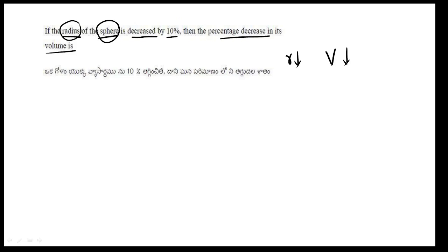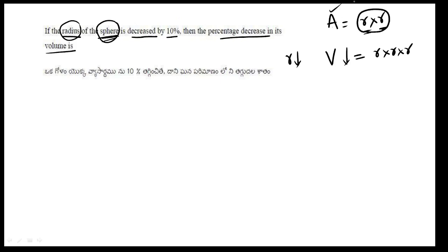For area, the radius is multiplied 2 times, because area is π r squared. It has sides — area is only 2 times r. And for volume it is 3 times r, because the volume of a sphere is (4/3) π r cubed. So volume changes 3 times when radius changes.